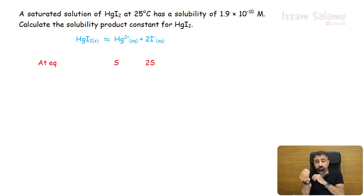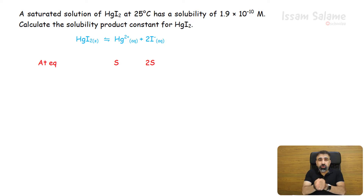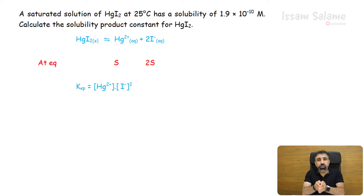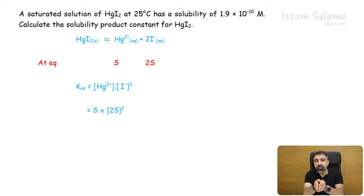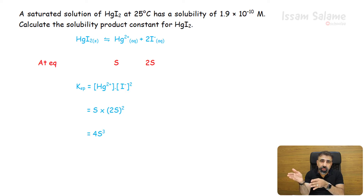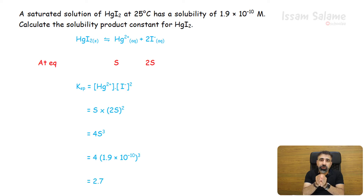S, the solubility, equals 1.9 × 10⁻¹⁰. Substituting into the Ksp expression: Ksp = [Hg²⁺][I⁻]² = S × (2S)² = 4S³. Replacing S with its value, we get Ksp = 2.7 × 10⁻²⁹.